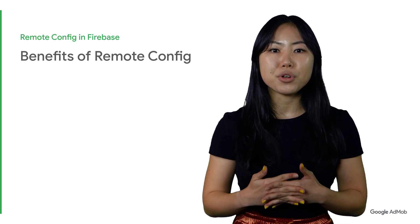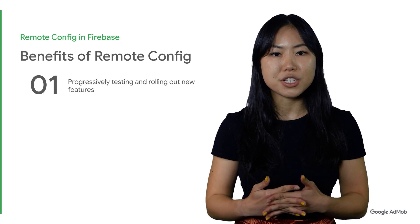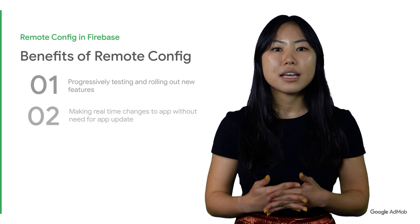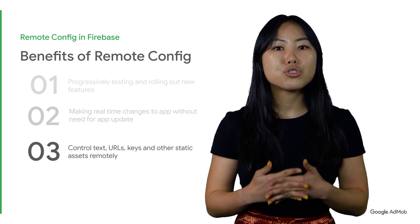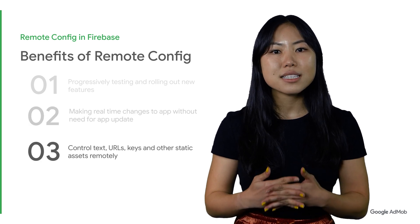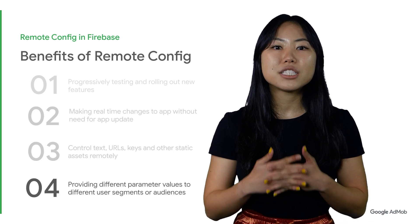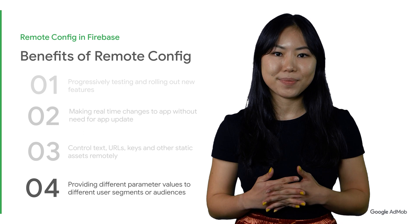Some of the key benefits of Remote Config include progressively testing and rolling out new features — for example, new ad formats or placements — making real-time changes to the app without the need for an app update, controlling text, URLs, keys, and other static assets remotely, and providing different parameter values to different user segments or audiences. Remote Config is a free service with no DAU or MAU caps and serves more than 1 billion requests per day.